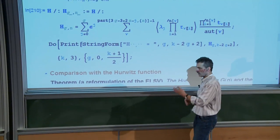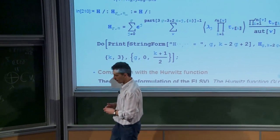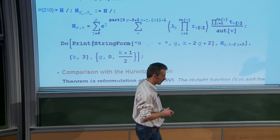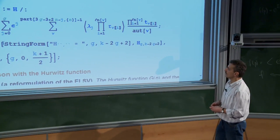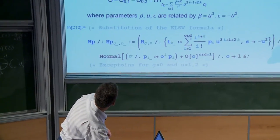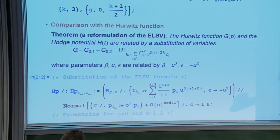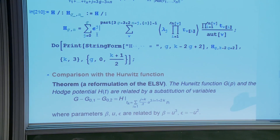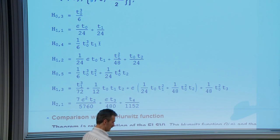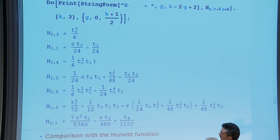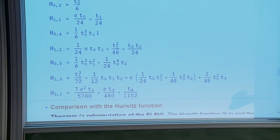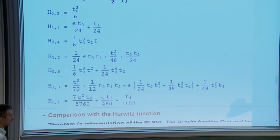Now, how can we prove the Witten conjecture using the ELSV formula? The left-hand side is a solution of the KP hierarchy. We want to prove the right-hand side is also a solution. It would be convenient if this change of variables were a symmetry of the KP hierarchy. But the change of variables is not a symmetry — it is not even invertible, since each variable t_k involves an infinite series in all p_i with all coefficients nonzero. Instead, we use an intermediate set of variables q and an intermediate change of variables that is actually a symmetry.